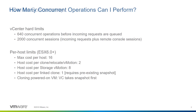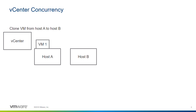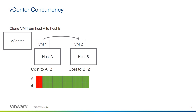Let me depict some of these pictorially. Imagine that you want to clone a VM from host A to host B. When you perform this clone operation, it costs two slots. So as the source, host A is charged two slots, and as the destination, host B is also charged two slots. As you can see, if each of them has a total of 16 slots, two are taken up by this clone operation, leaving each with 14 slots available for other provisioning operations.